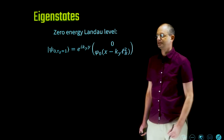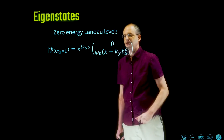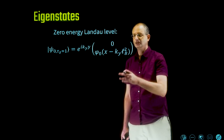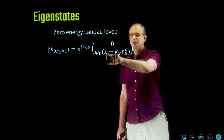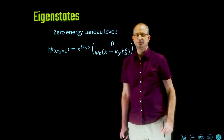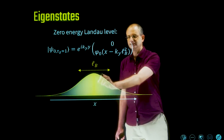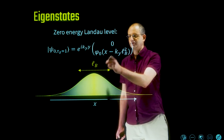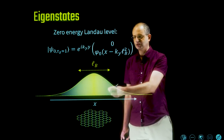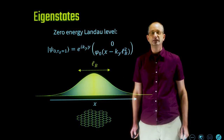Examining the zero-energy Landau level wave function more closely: for valley K (tau_z = +1), as a function of x and y it is a plane wave in the y-direction times a two-component spinor that is zero on the A-sublattice and a Gaussian phi_0(x − k_y·l_B²) on the B-sublattice. The Gaussian has center at k_y·l_B² and width of order l_B, which by assumption is much larger than the lattice spacing — the regime where the Dirac approximation holds.